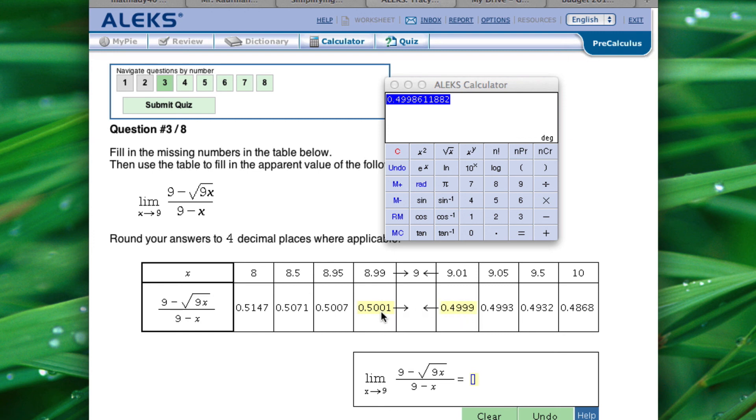So we can see that our value is going to get closer and closer to 0.5. So we're going to list that with the four decimal places, 0.5000.